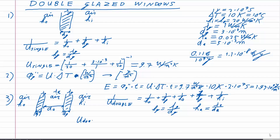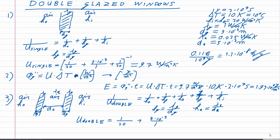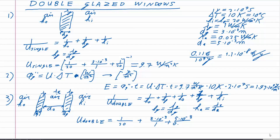Plugging in all the numbers gives us a final answer of U_double = 3.27 W/m²K.